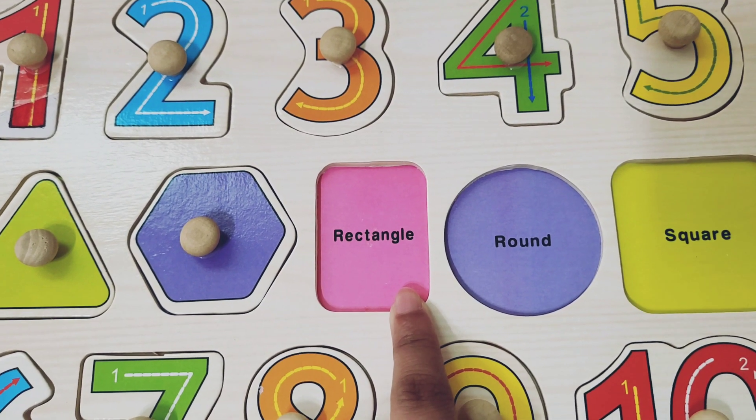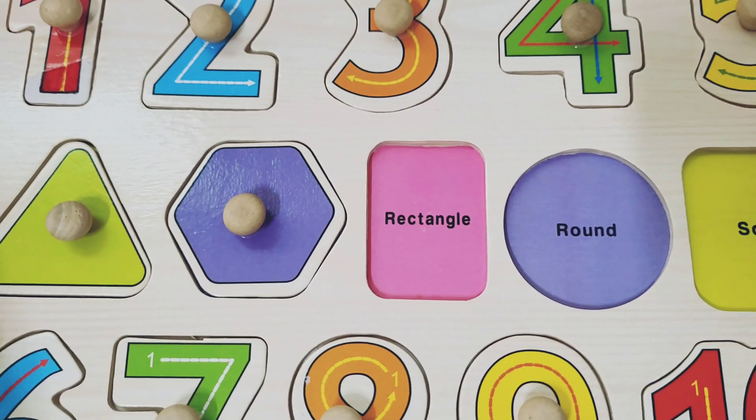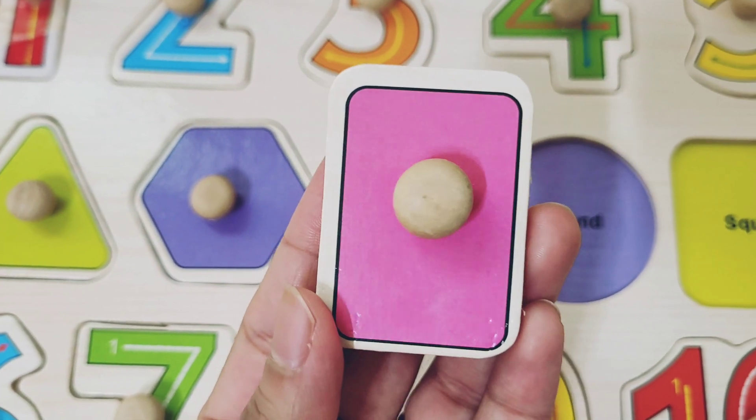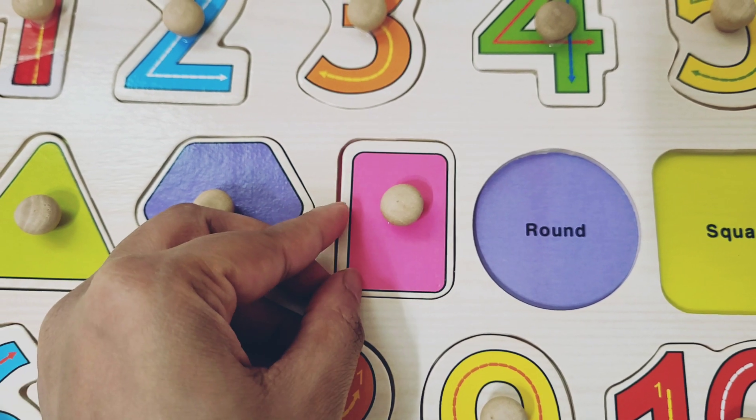And here we have a rectangle. And this color is pink. And here we have a pink rectangle. Let's put this rectangle here.